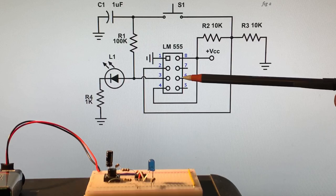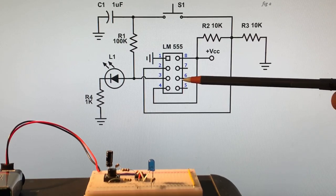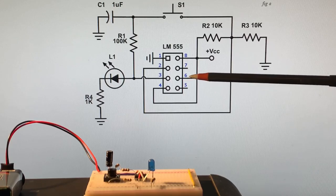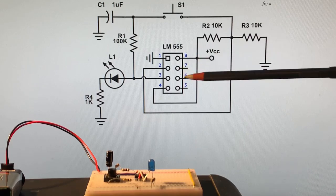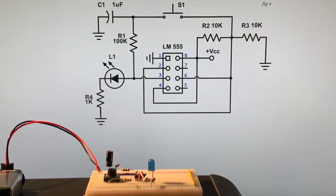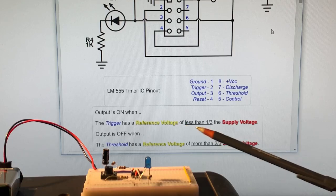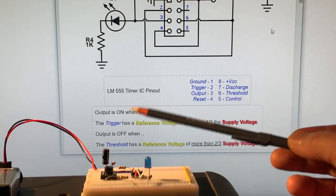When we send a high voltage or more than two thirds the supply voltage to pin six, that triggers the LM555 to turn off. So it works like a flip-flop. It turns off the output to pin three. And the basic rule is the trigger has a reference voltage of less than one third of the supply voltage, the output will be on.